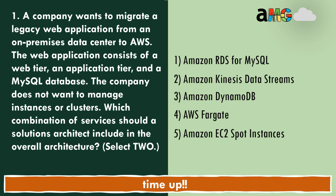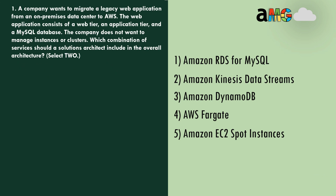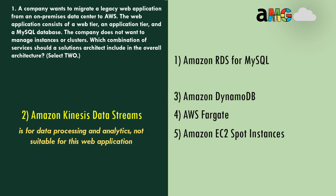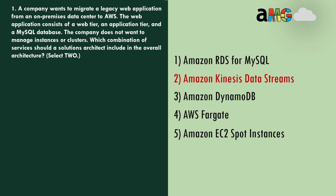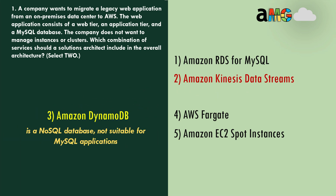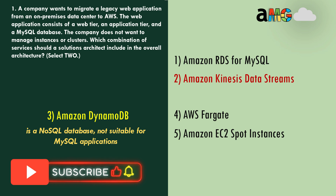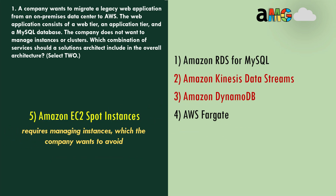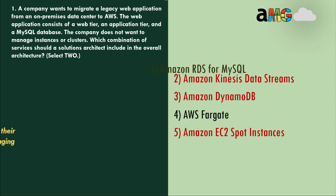Time's up. Let's analyze the answers. Option 2 — Amazon Kinesis Data Streams is for data processing and analytics, not suitable for this web application, so this is the wrong answer. Option 3 — Amazon DynamoDB is a NoSQL database, not suitable for MySQL applications, so wrong answer. Option 5 — Amazon EC2 Spot Instances requires managing instances, which the company wants to avoid, so wrong answer.